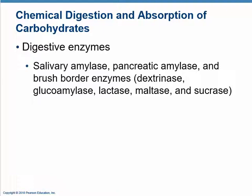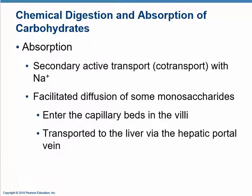Dextrinase breaks down dextrin, glucoamylase breaks down glucose oligomers, lactase breaks down lactose, maltase breaks down maltose, and sucrase breaks down sucrose — causing hydrolysis of those to their simpler monosaccharide components. The monosaccharide components are absorbed via secondary active transport, sometimes called sodium drag: sodium moves, which causes osmosis and drags along the others. Some absorption is facilitated diffusion through gated channels, and then this is all brought to the liver where it's processed.